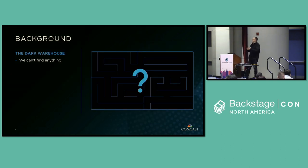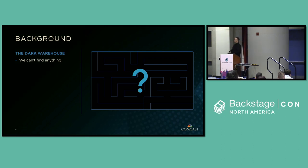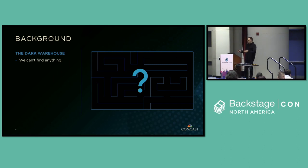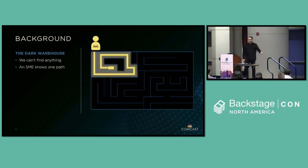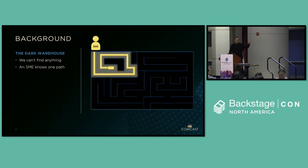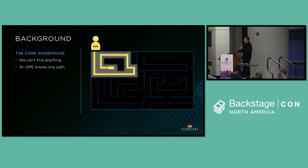You have a project, there's something you're trying to accomplish. Let's say you need the billing service — you know it exists. You need to find the person that maybe knows where it is or how to interact with it. You manage somehow to find this subject matter expert, and they're able to guide you through the dark warehouse to that component. Now we know one path. We know how to get to this one thing. But we need other things in order to make our cool product.